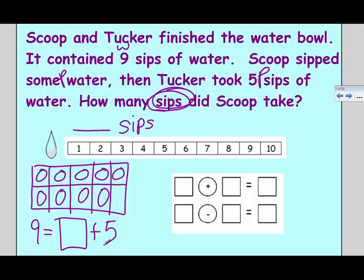What I'm going to do is cross off Tucker's sips. That's one, two, three, four, five. And in fact, since I used a ten frame, I could have just crossed them all off at once.